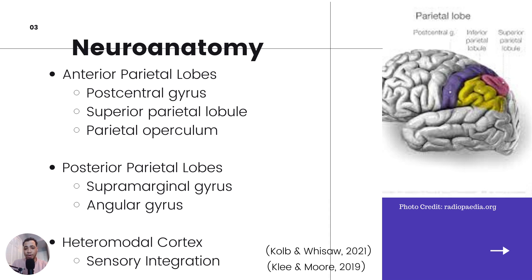Let's start with the neuroanatomy. We'll start with the anterior, which just means more in the front parietal lobes — this is where the somatosensory processing takes place, signified by the purple area. This is a simplification of what's going on; the brain is very complex. Some major areas are the postcentral gyrus and the superior parietal lobe. The next area is the posterior parietal lobes, which is behind the anterior area, signified more by the yellow and the pink area.